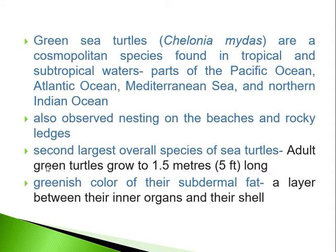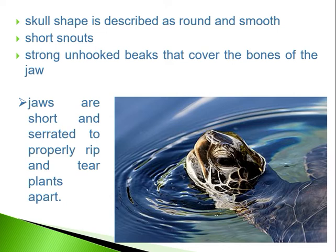In India it is often seen around the Andaman Islands and the coastal Saurashtra in Gujarat. It is the second largest overall species of sea turtles, where the adult green turtles can grow to a length of about 1.5 meters. The shape of the skull is somewhat round and smooth, and the snout is short, whereas other turtles have a longer hooked beak. In the green turtle the snout is short and the beak is also unhooked.